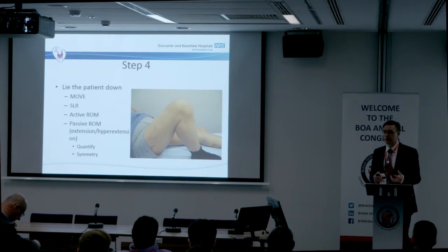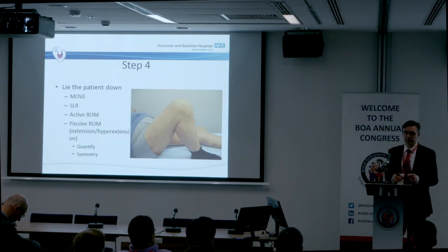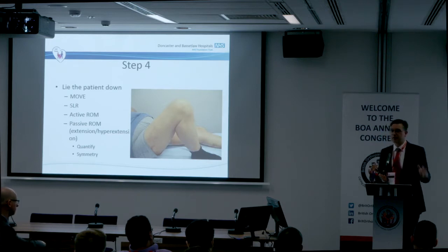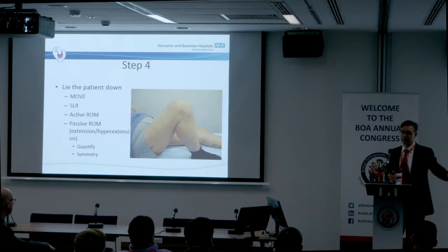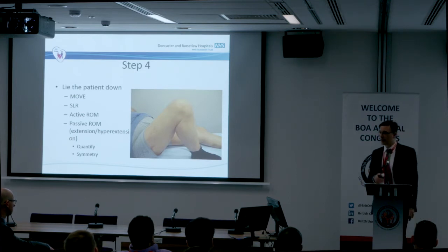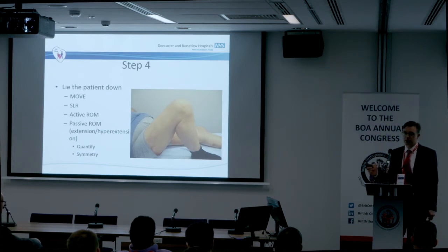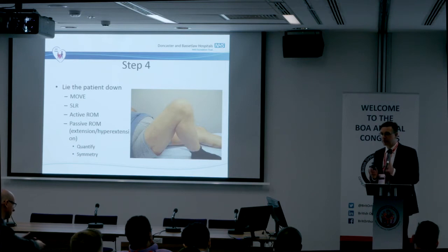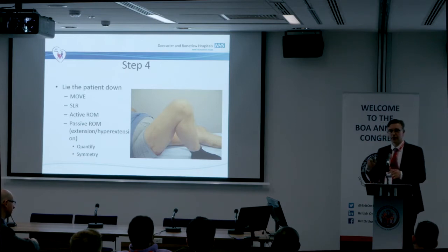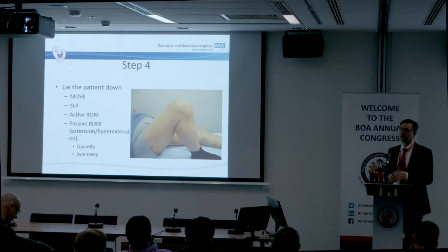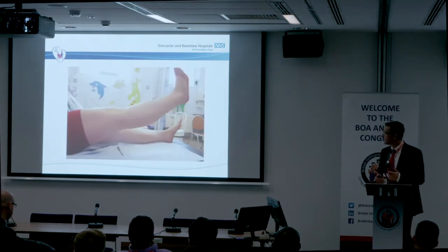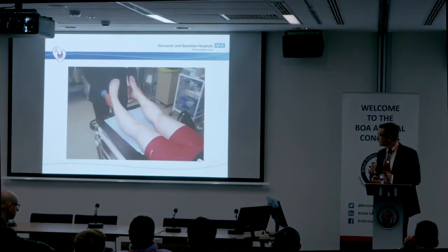Lie the patient down now and move the patient. This is where I see my registrars make a mess of it — they're desperate to do it themselves. But you've got a patient there who can move his leg; you already know they can bend the knee, so get them to do it first. Get them to do a straight leg raise — that's really important, because I see loads of missed quadriceps tendon injuries in my practice. Get them to flex the knee. If they've got full range of movement, you don't need to try and squeeze that extra bit out of them, and you can hurt the patient. Look for extension, quantify, and compare with the opposite side. Measure it, and get used to measuring range of movement so you're not doing it for the first time in the exam. Check for hyperextension.